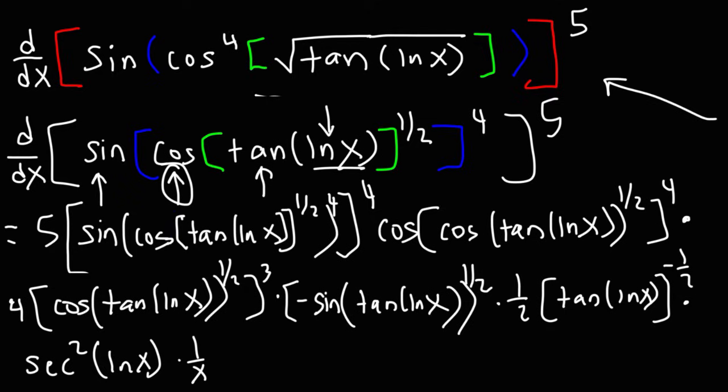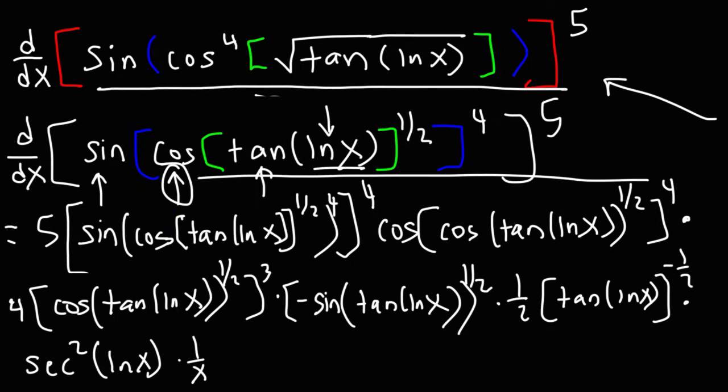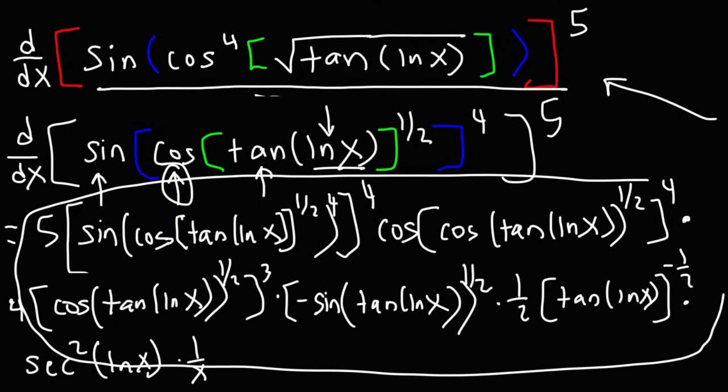Finally, we find the derivative of ln x, which is 1/x. That's how you find the derivative of this entire expression using the chain rule. You could simplify or rewrite the answer in a more pleasant form, but that is the complete result.